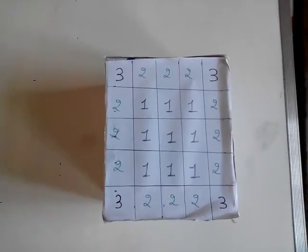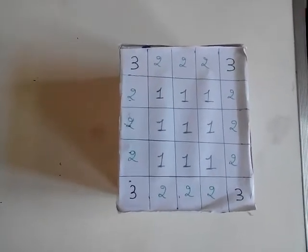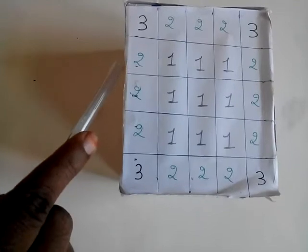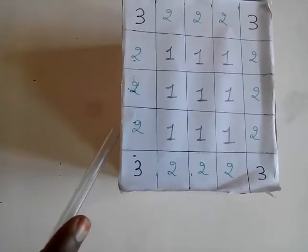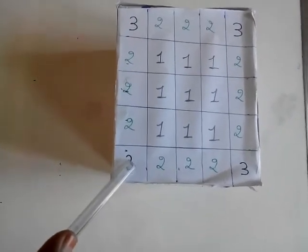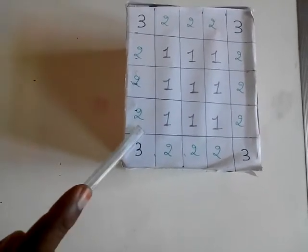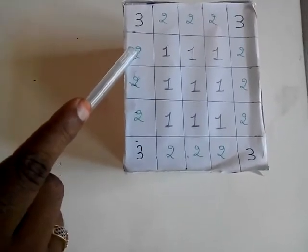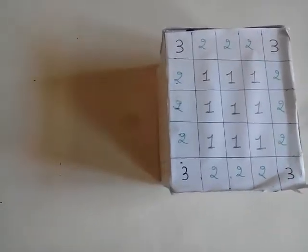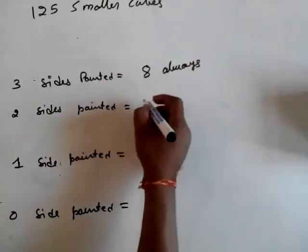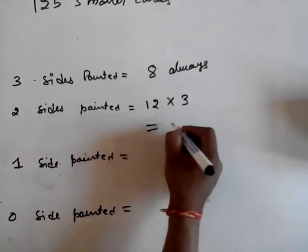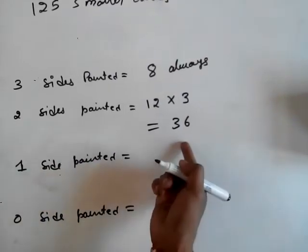My 2nd question: how many cubes will have their 2 faces painted? The cubes on the edges — except the cubes at the corners — are the ones which will have their 2 faces painted. In this case we have 3 cubes on 1 edge which will have their 2 faces painted. Since a cube has 12 edges, the total number of cubes with 2 faces painted will be 12 edges × 3 cubes on each edge = 36.